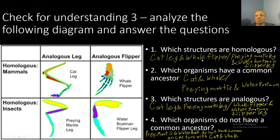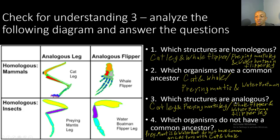Let's see how you did on the third check for understanding. Number one — which structures are homologous? The cat leg and the whale flipper are homologous: similar in structure. The praying mantis leg and the water boatman flipper leg are also similar in structure, so both pairs are homologous. Number two — which organisms have a common ancestor? Organisms with homologous structures share a common ancestor, so the cat and whale share a common ancestor, and the praying mantis and water boatman share a common ancestor.